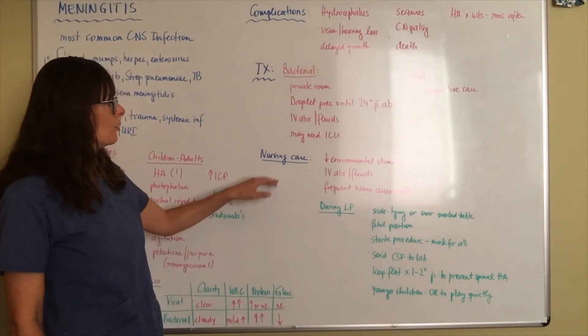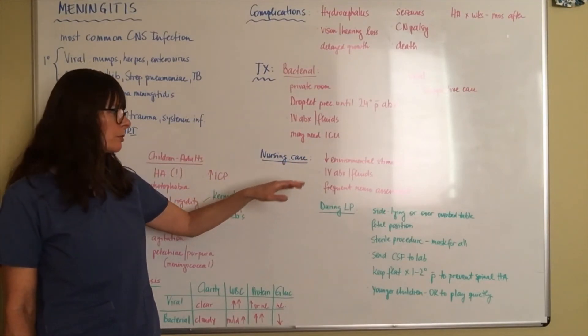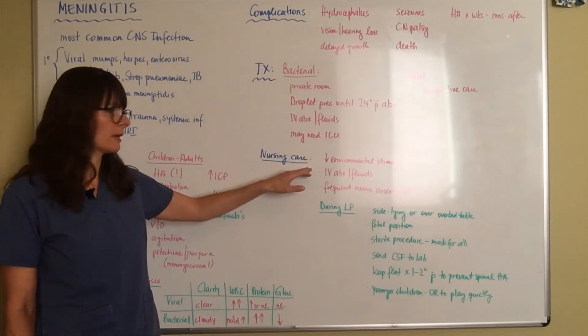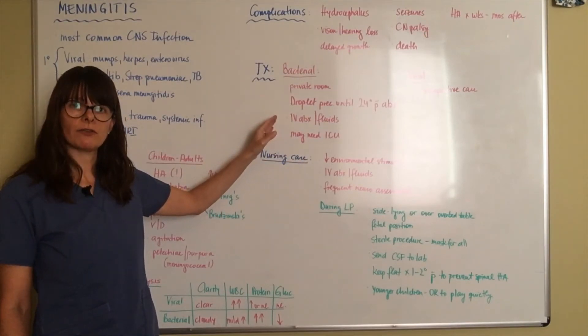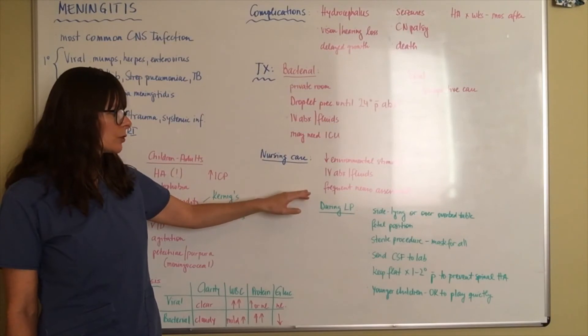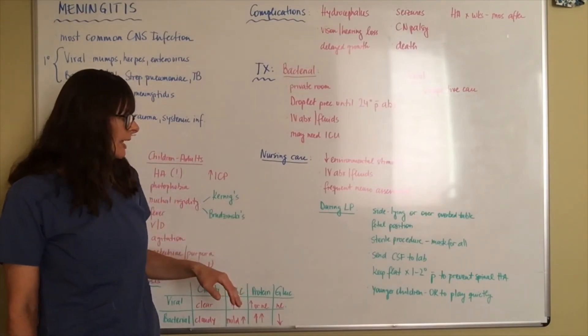Now nursing care: when the patient is admitted because of that irritation of the central nervous system, we want to make sure we decrease environmental stimuli. We're going to be in charge of the administration of IV antibiotics and fluids. Then we're going to do frequent neural assessments to see how the patient is progressing, are they getting better or worse. Clearly we always worry about their airway maintenance if they are altered. If they're getting worse they might not be able to maintain their airway and they might require mechanical ventilation.